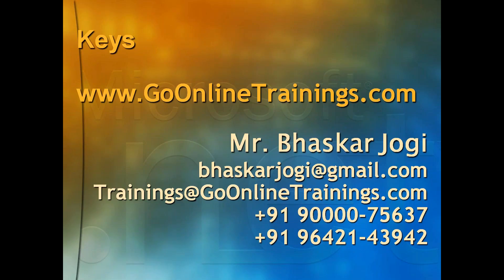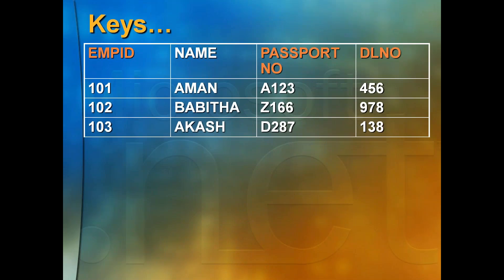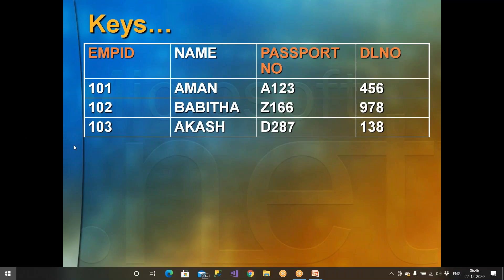Let me show you a table. I have an employee table with employee ID, employee name, employee passport number, and employee driving license number. I have some data stored in the table. I want to get a unique row from the table. Let me first tell you what a key is, then we'll talk about this example.